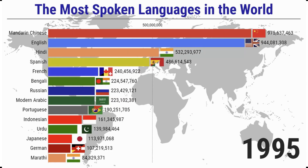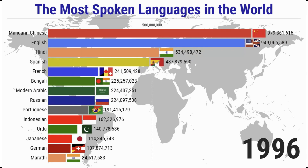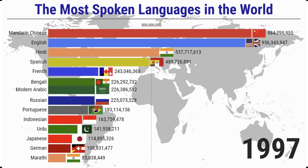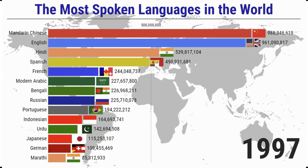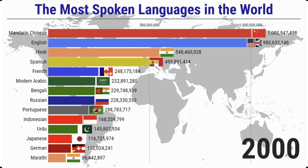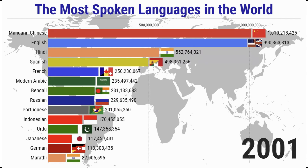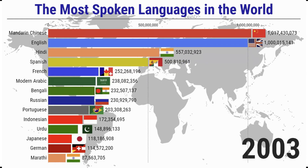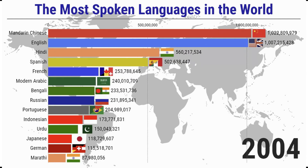The proportion of global GDP in official languages: in 2022, the world created a gross domestic product of 101.6 trillion U.S. dollars, of which English-speaking countries and regions created a GDP of 39.3 trillion U.S. dollars, accounting for 38.7 percent of the world. The Chinese-speaking region created a GDP of 19.5 trillion U.S. dollars, accounting for 19.2 percent of global GDP — less than half of that of English-speaking countries.